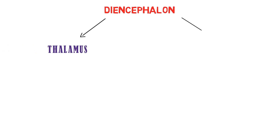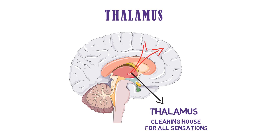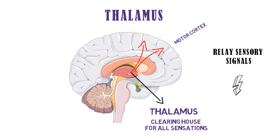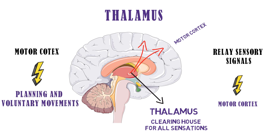The second part of the forebrain is the diencephalon, which consists of the thalamus and the limbic system. The thalamus serves as a central clearing house for all sensations. The main function of the thalamus is to relay sensory signals to the motor cortex, which is a region of the cerebral cortex involved in planning and control of voluntary movements.